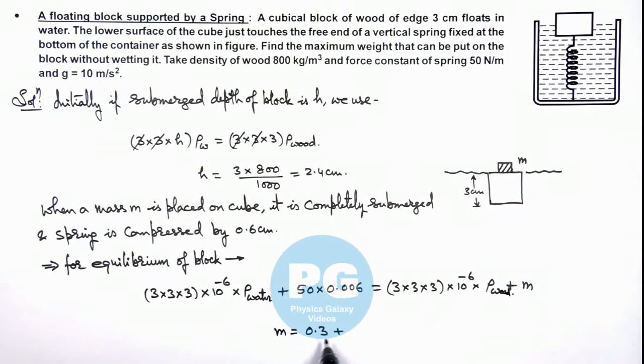So here this will be 3 by 3 by 3, this is 27 into 10 to power minus 6 multiplied by ρ water, so this is 1000 minus 800. Numerically when you solve this, it will give you the result 0.354 kilogram. That is the result of this problem.